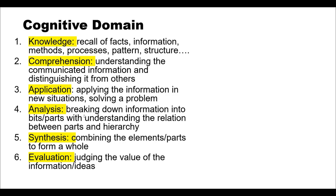The final level is evaluation, which leads to judging the value of information and assessing the worth of different ideas that have been learned. The learner can conclude or infer different kinds of value from the information and use it for the benefit of humanity or the utility of knowledge itself. That's all from this part of the video. In the next video we will explain the modification introduced in Bloom's Taxonomy and what types of questions can be asked from the different levels. I hope you understood the topic. Good luck and thank you.